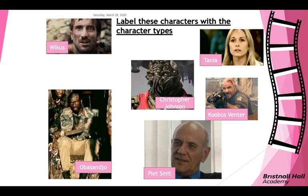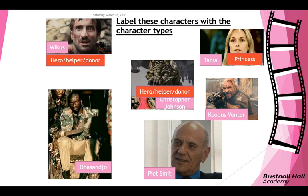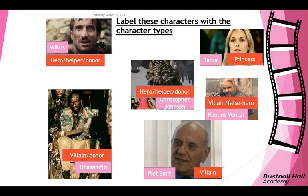The answers: Wikus is the hero but can also be seen as the helper or donor. Christopher Johnson is also a helper, hero, and donor. Tanya is the princess. Obesandjo is the villain and the donor because he gives weapons to Wikus. Koobus Venter is the false hero but also the villain — other characters treat him as if he's a hero when actually he's the villain. Piet Smith is clearly the villain.